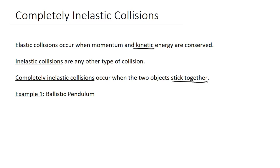So let's look at an example of a ballistic pendulum, and we're going to use this to find the speed of a bullet. You might say, can't I just hold out a radar gun? Well, I wouldn't get in the way of that, that's for sure. There are other ways to do this, but this is one model — maybe not the most practical, but it shows how it works.